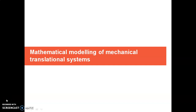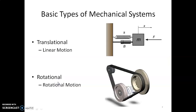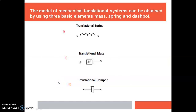Dear students, we are discussing mathematical modeling of mechanical translational systems and we have seen the basic elements of the mechanical translational system. They are mass, spring and dashpot.